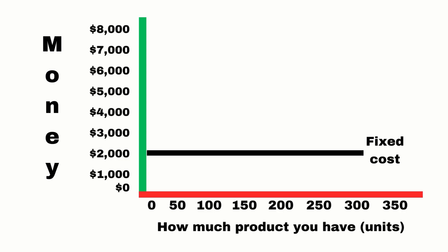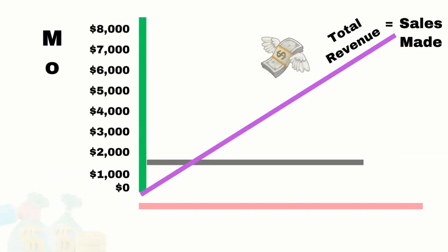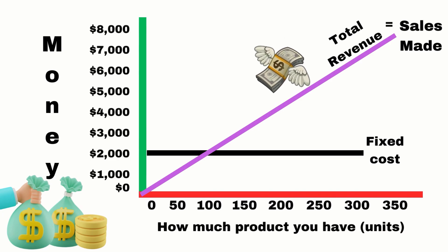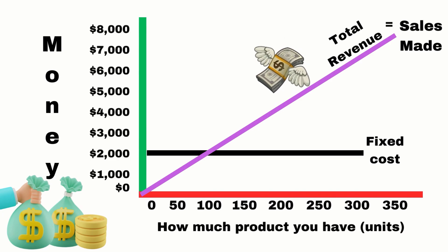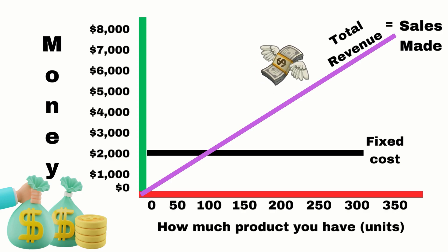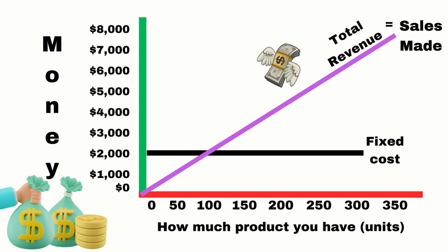Now we're going to talk about your fixed cost line. Your fixed cost was two thousand dollars, so you're going to put that black line right where it says two thousand dollars. All the numbers I'm working with come from video 7, so if you didn't watch it go back and watch it. This purple line — or lavender, whichever you want to call it — represents your total revenue, which is equivalent to how much money you've collected from selling the product.